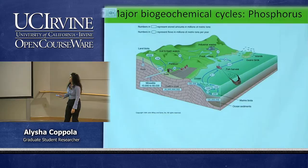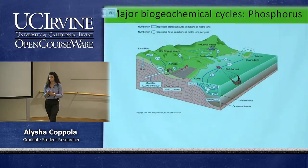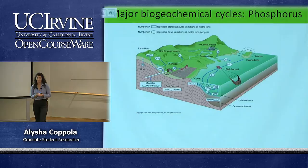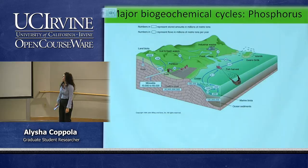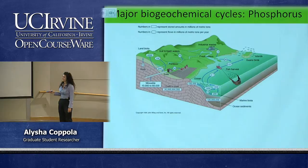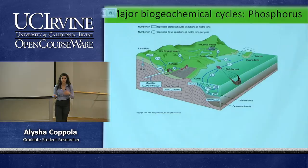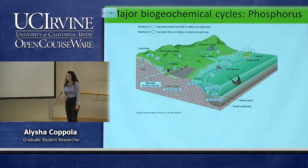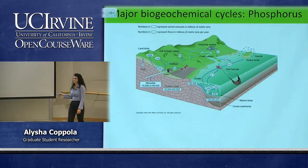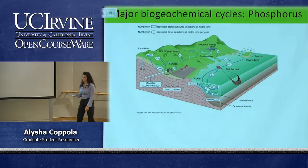Now we're going to talk about one of the major biogeochemical cycles: phosphorus. This is required for life and is one of the main limiting reagents for vegetation. In the diagram, the boxes show stored amounts in millions of metric tons. Most phosphorus is in soils and the earth's crust, and it's not usable to the biosphere unless it's in the form of phosphate — which is released through chemical weathering of rocks.